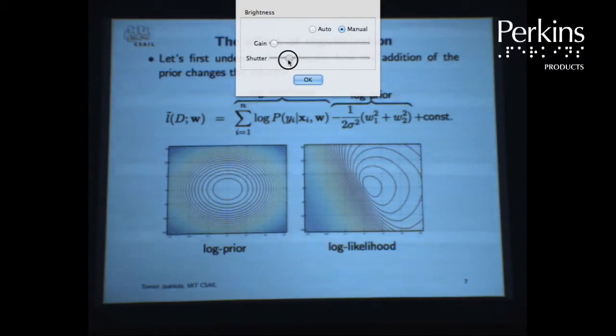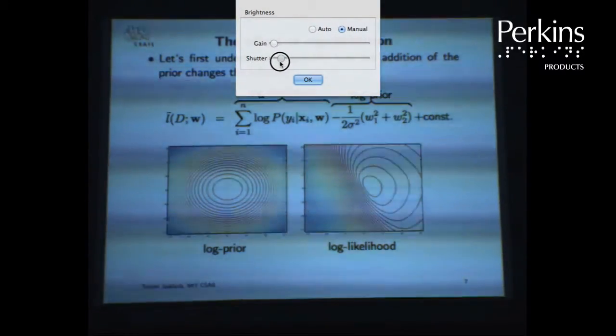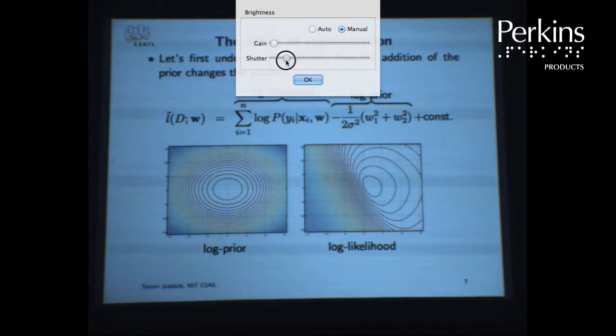To eliminate the flicker, adjust the shutter control until you find the sweet spot where the image does not flicker.